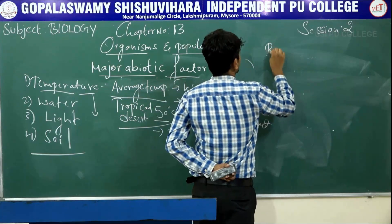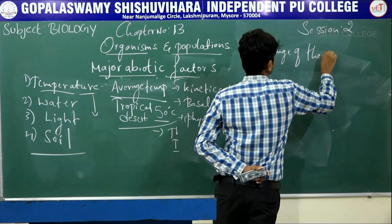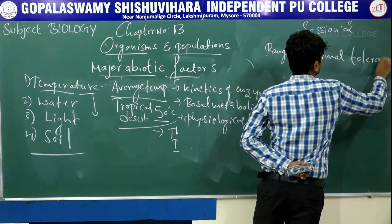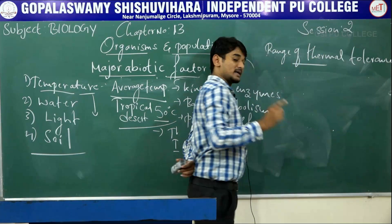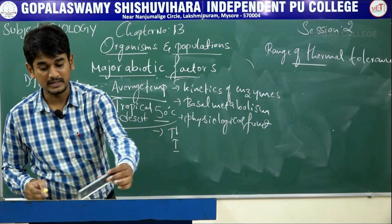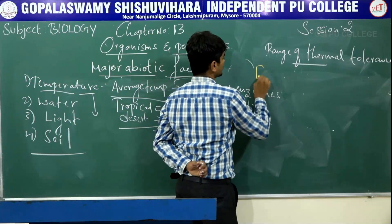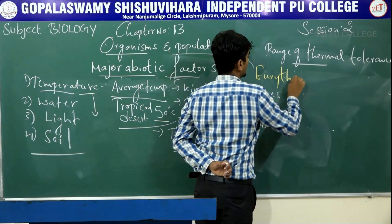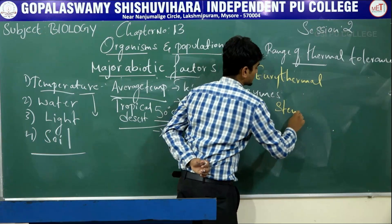Based on the range of thermal tolerance, organisms are divided into two types: one is eurythermal and the other is stenothermal.